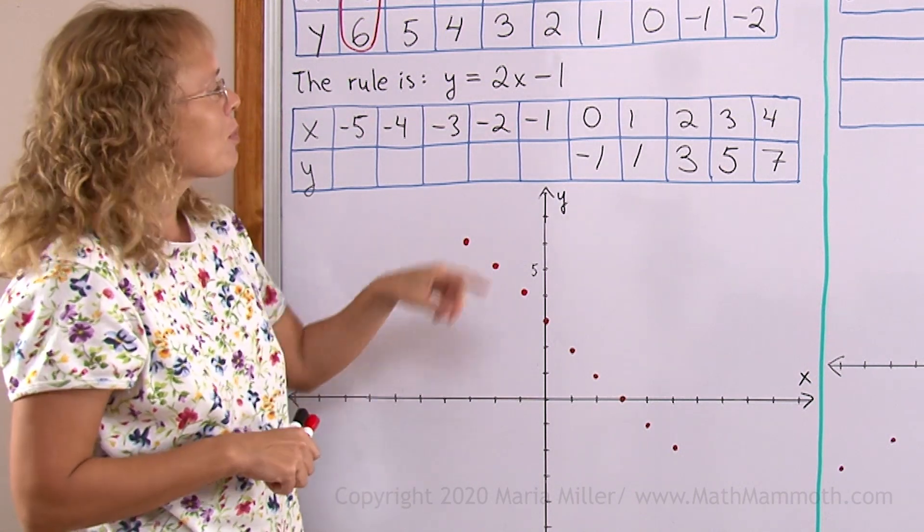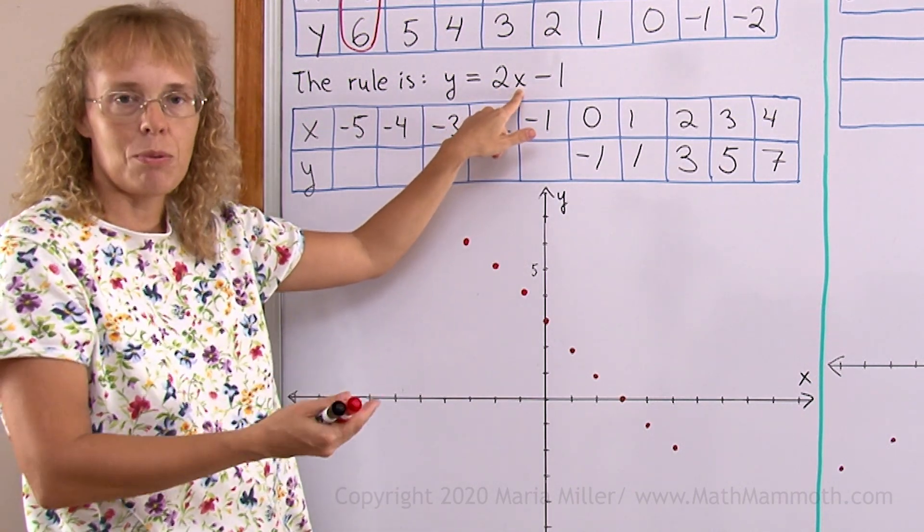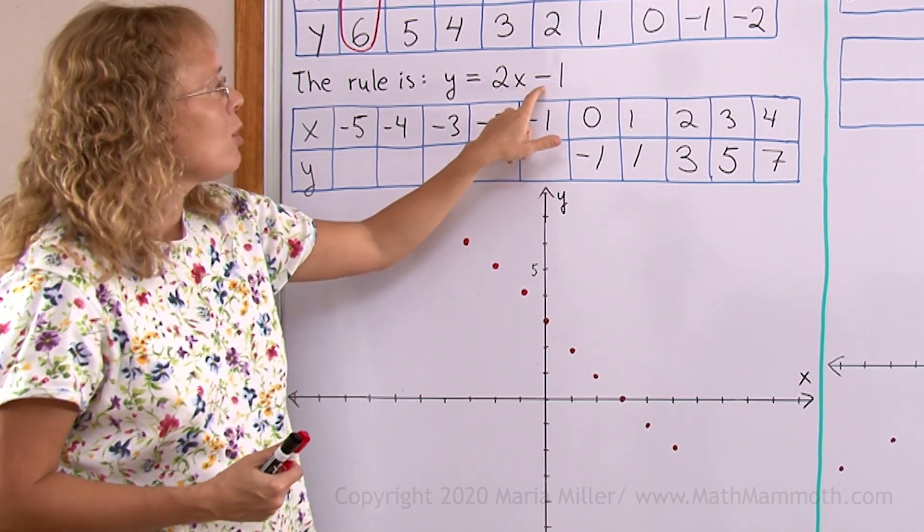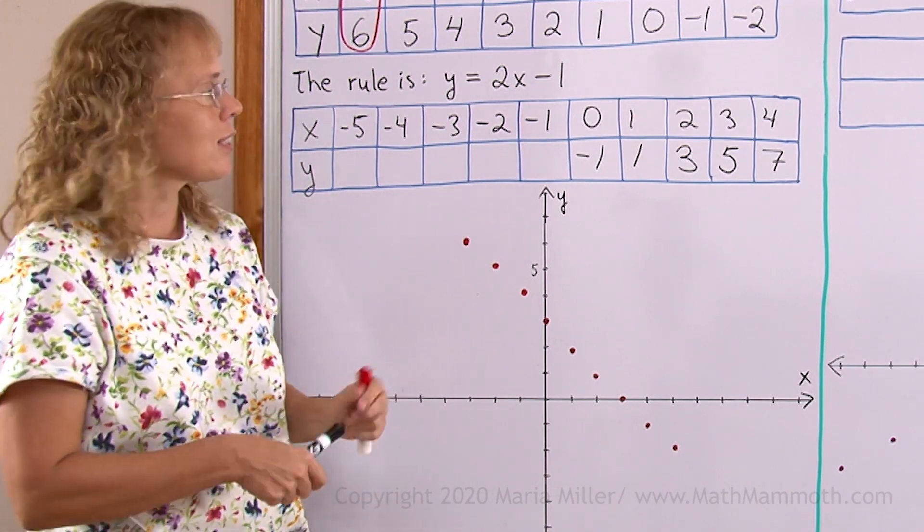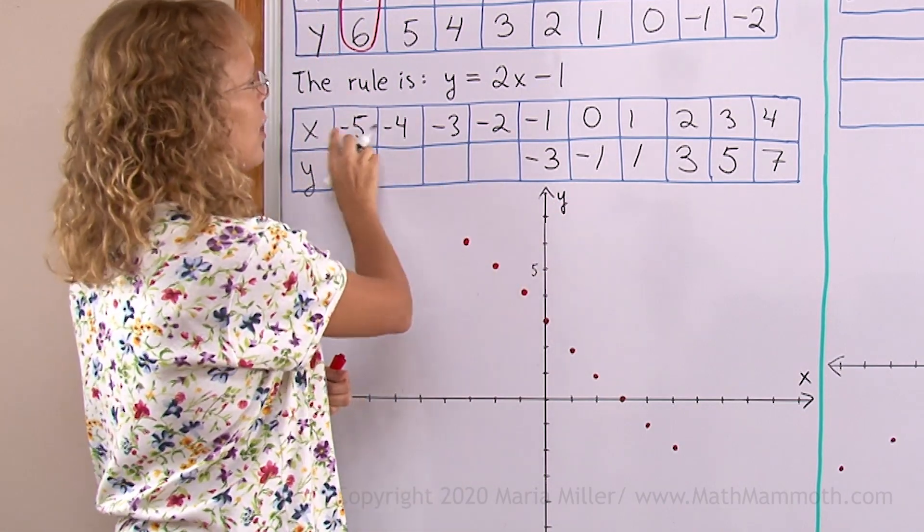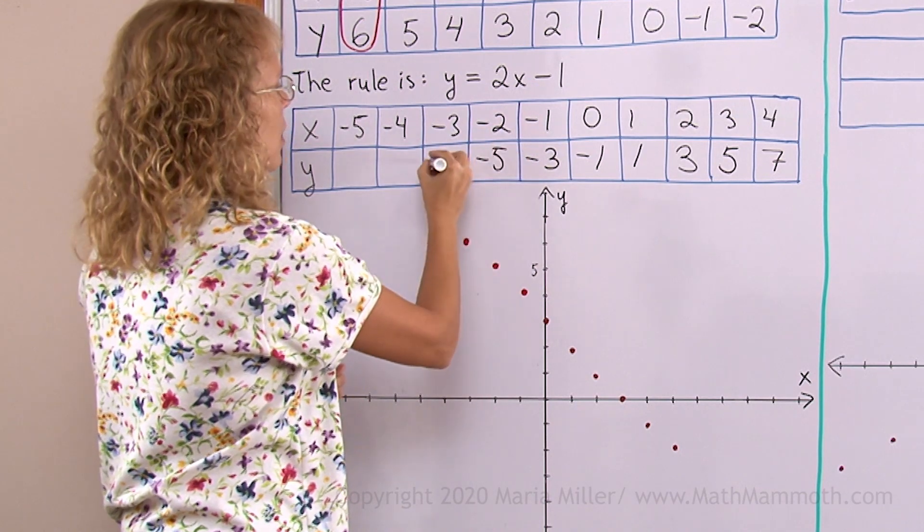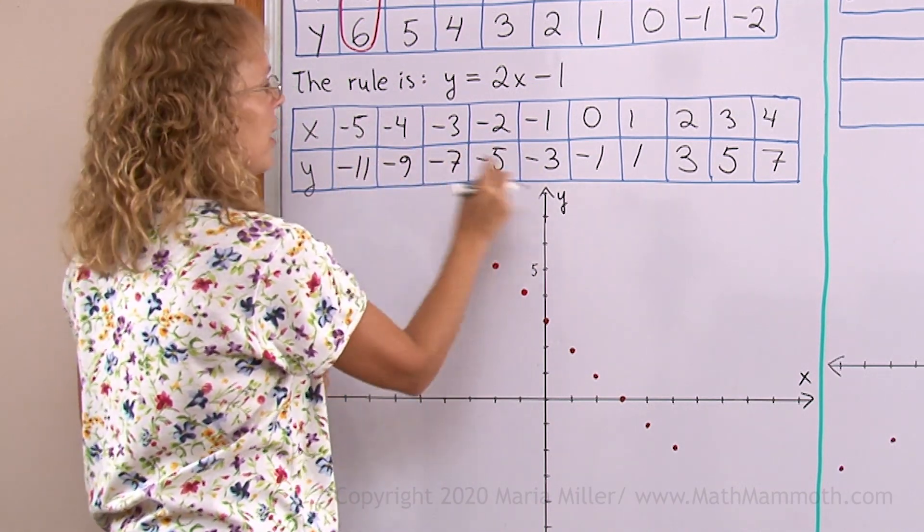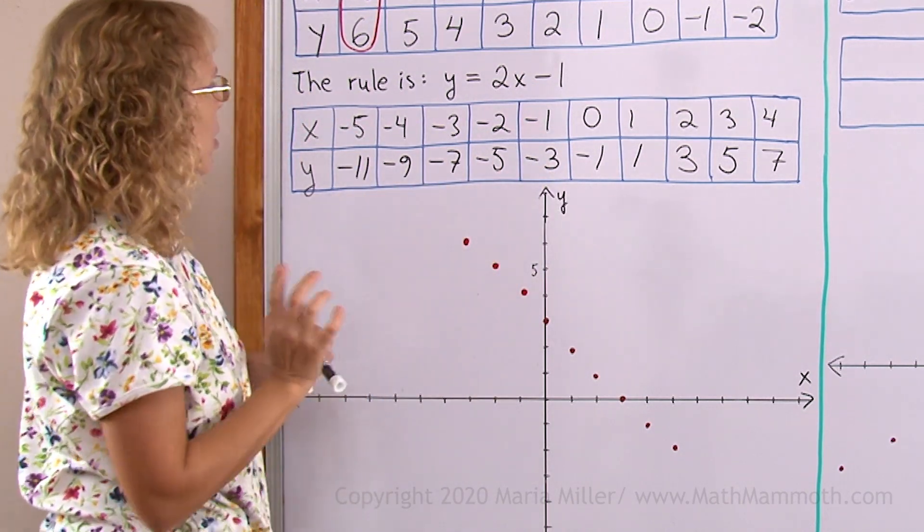Now, if you are not confident as to how to calculate 2 times a negative number, then you can just look at the pattern here in the y values and continue it that way, which is very easy. But let us look at a few examples anyway. If x is negative 1, 2 times negative 1 is negative 2. And then you subtract 1, you get more into the negatives, so it is negative 3. And similarly for these, but you can just continue the pattern. There's the pattern of odd numbers or there's always a difference of 2. Two steps every time.